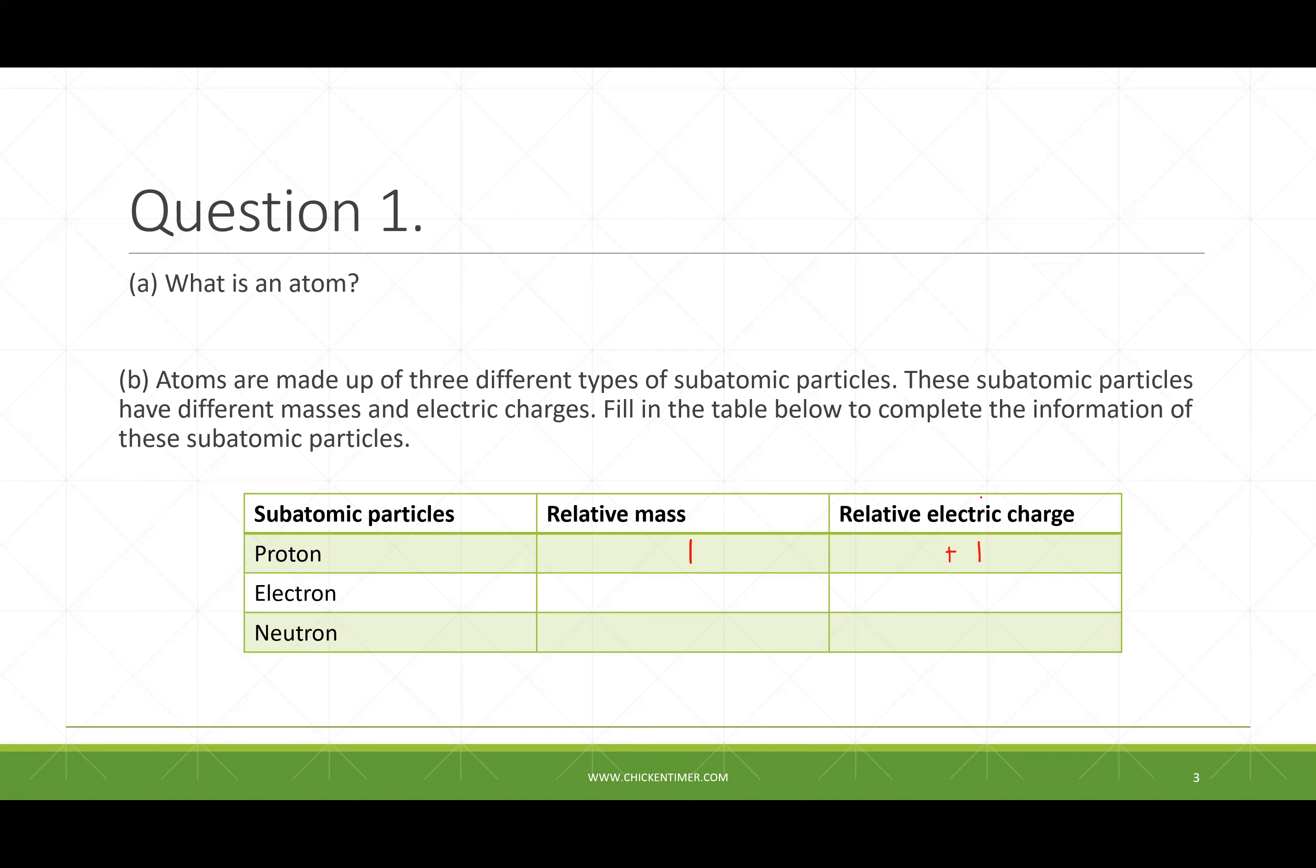Electron. The electron mass is also minus one. Electron mass - mass has no positive or negative, it's just a number.